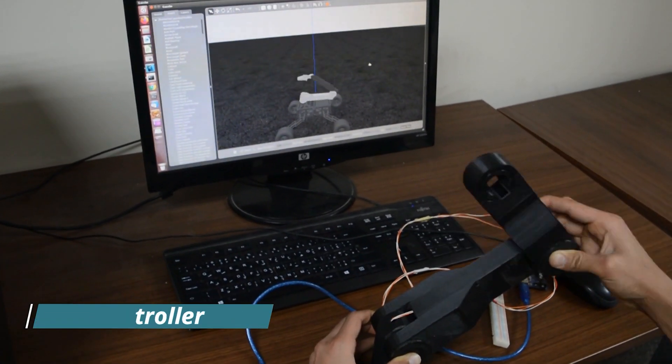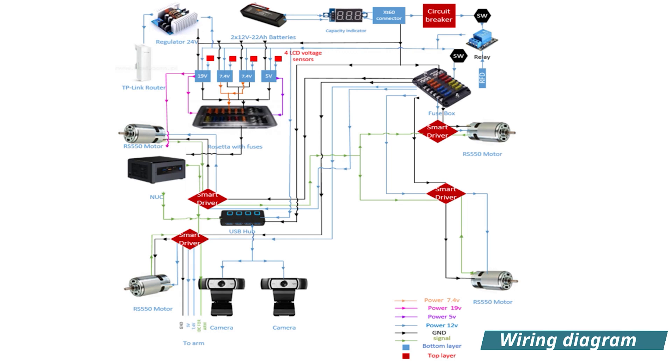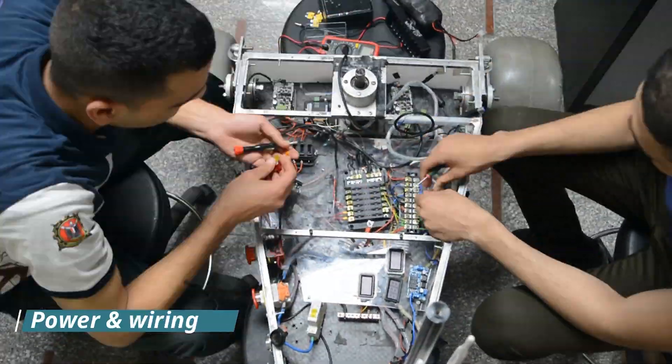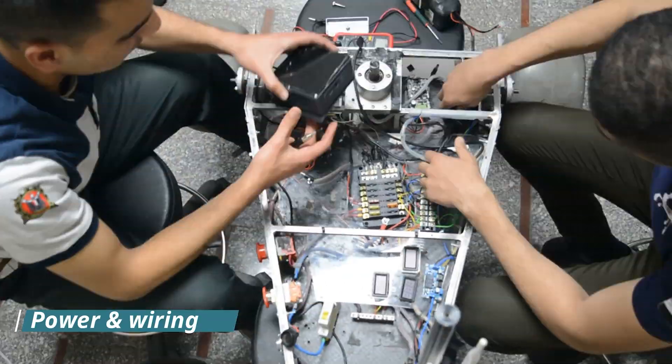The rover is powered by 22 amp hour lipo batteries which are monitored by the main controller. Emergency power switches were added for safety.